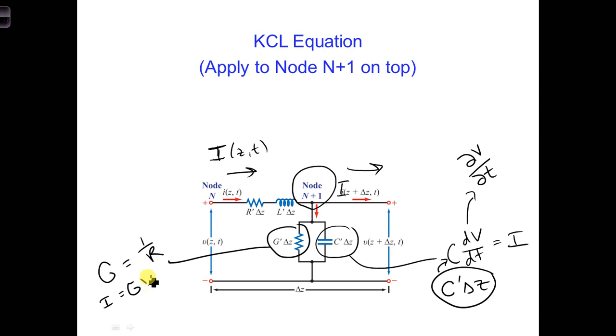As we have seen for the capacitance, the conductance of the transmission line is in units of Siemens per meter, so we're going to have to multiply G prime by delta Z and plug that in here for G in order to get the total conductance.